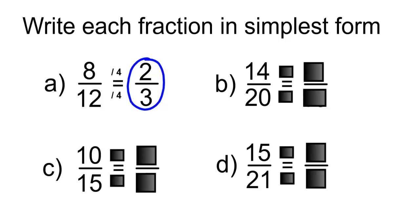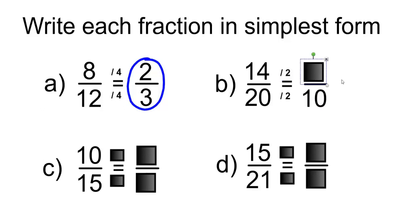For 14 over 20, the greatest common factor is going to be 2. 20 divided by 2 is equal to 10, and 14 divided by 2 is equal to 7. So 7 over 10 is equivalent to 14 over 20.